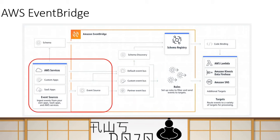The next important thing is source. Sources are the services which publish messages to the EventBus. Your sources could be anything — your AWS services. Any AWS service you think of, like Lambda, EC2, any of those services can publish messages to the EventBus. You can also create a custom application to publish messages to the EventBus. In fact, in this exercise, we are going to write a Python application which will simply publish a message to the EventBus. You can also integrate SaaS applications and partner solutions, which can also publish messages to the EventBus.